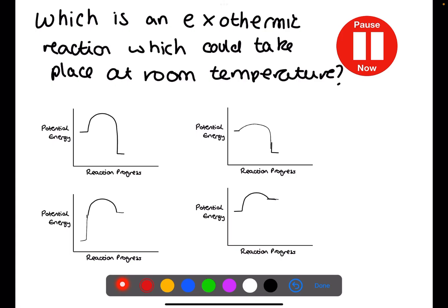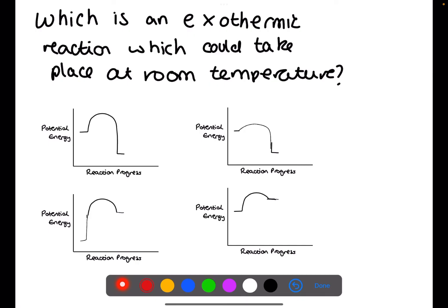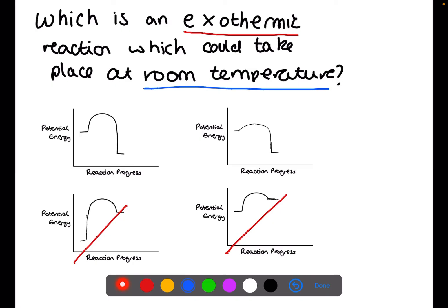Pause the video now and try this question. For this question we are trying to find which reaction is exothermic and could take place at room temperature. For an exothermic reaction the enthalpy of the products needs to be lower than the enthalpy of the reactants, so we can eliminate two of the options. If it is going to take place at room temperature, particles will not have great kinetic energy, so the activation energy needs to be low — which means the remaining option with a lower activation energy is the answer.